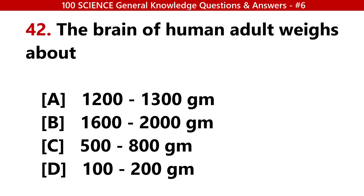The brain of a human adult weighs about? Answer A: 1200 to 1300 grams.